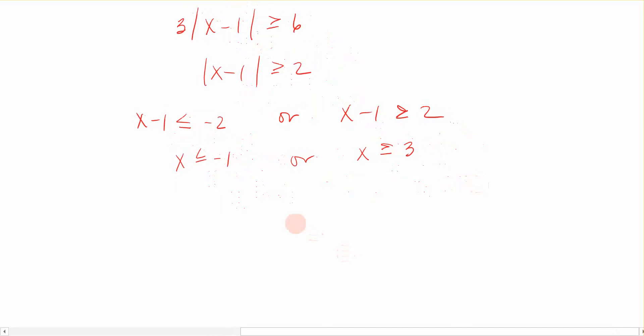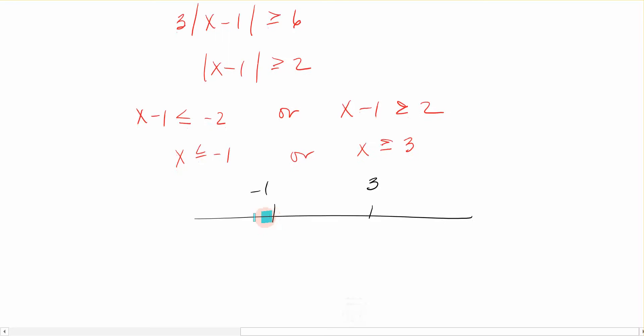So how do we graph that? Well, we're going to come down here, and I have negative 1 and a positive 3. Starting with this portion over here, this says x is less than or equal to negative 1. So I'm going to shade less than negative 1. And over here I have greater than 3, so I'm going to shade greater than 3.